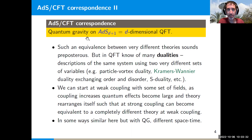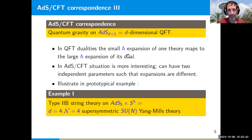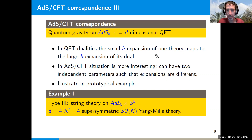In some sense the AdS/CFT duality is similar to these QFT dualities, except one side is a quantum gravity theory and the theories live on different spacetimes. There is also one other important difference: in QFT dualities the small ℏ expansion of one theory typically maps to the large ℏ expansion of the dual theory, while in AdS/CFT we can have two independent parameters such that the expansions in ℏ on the two sides are neither the same nor inverses of each other.